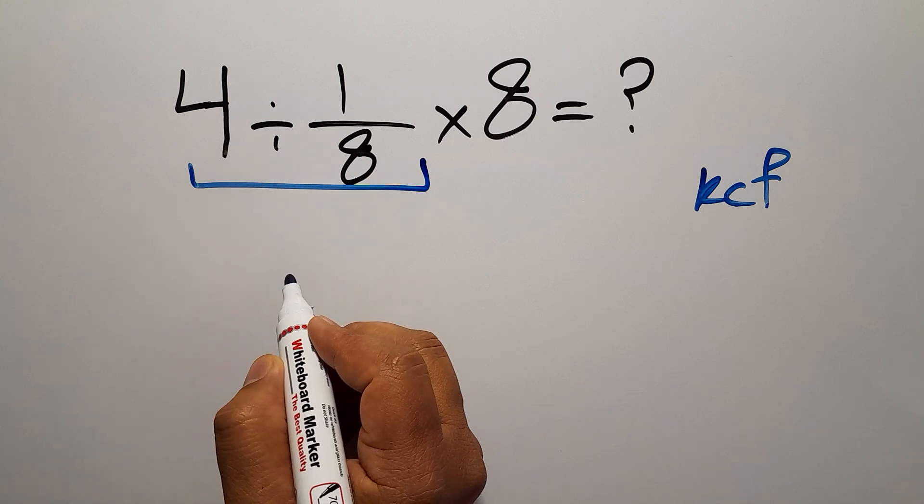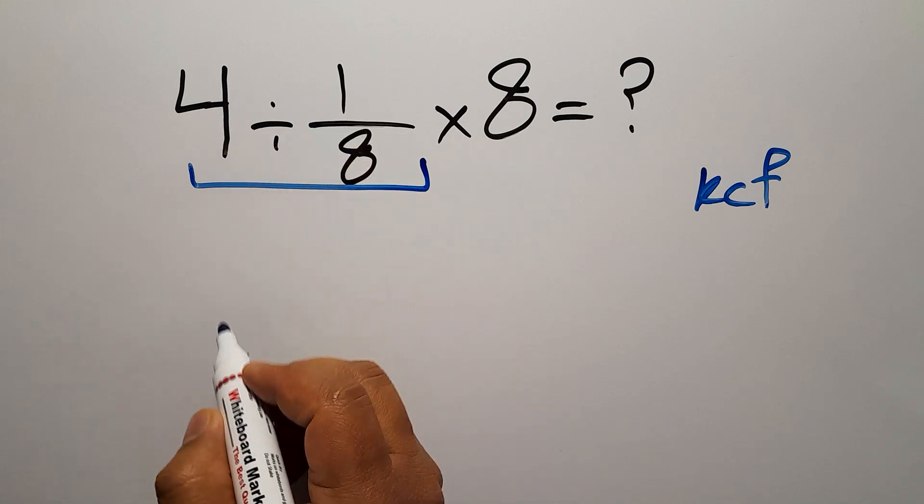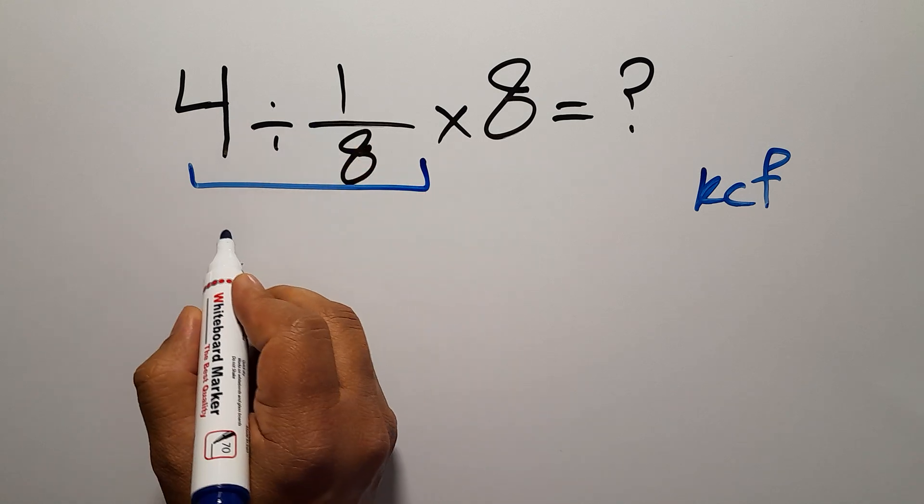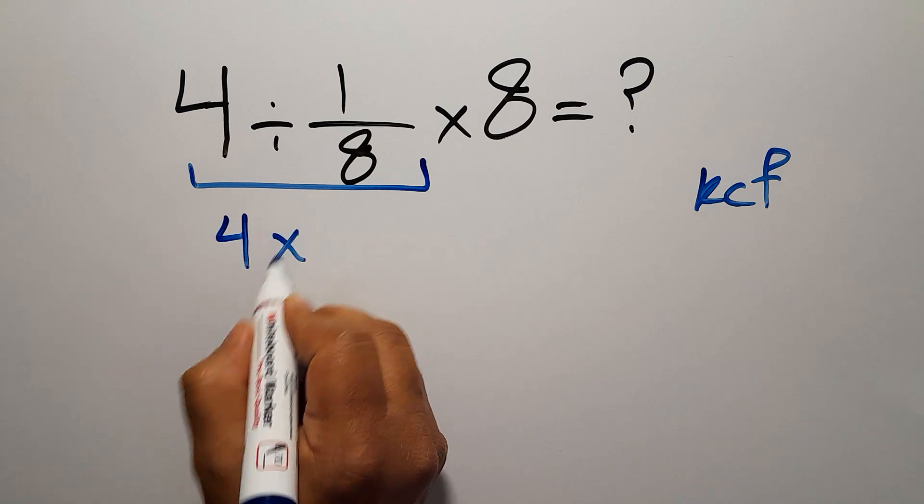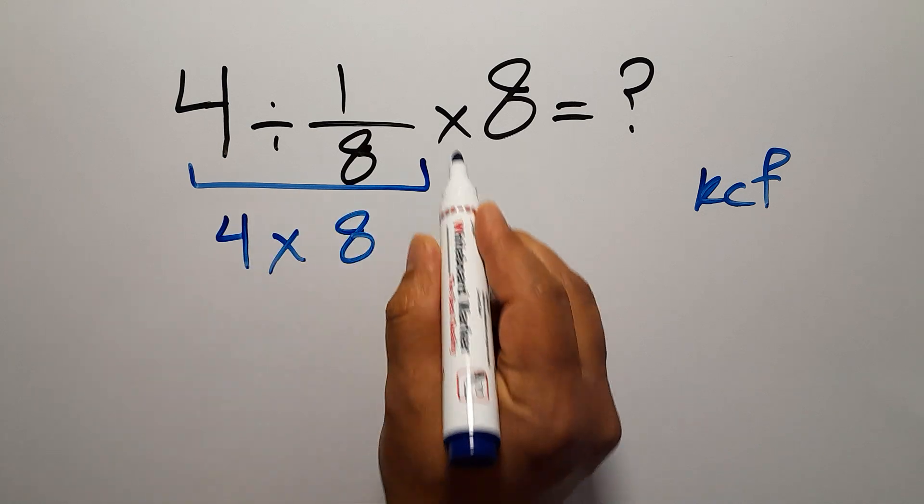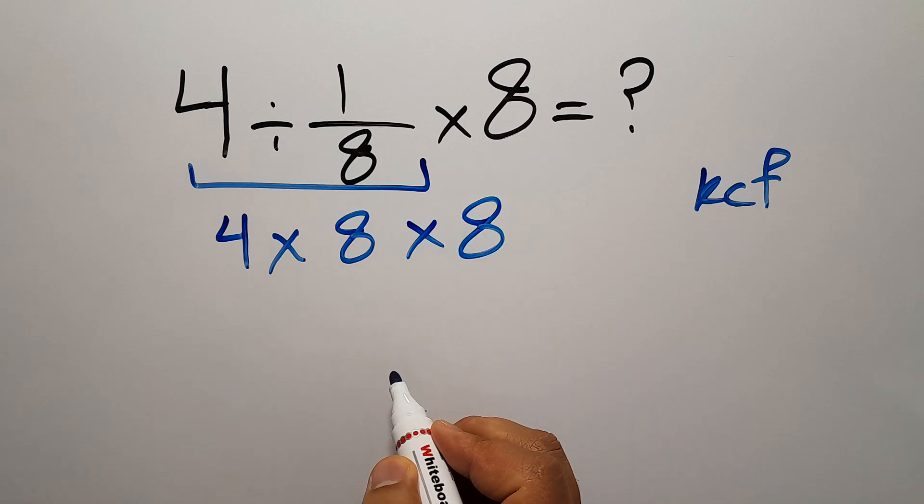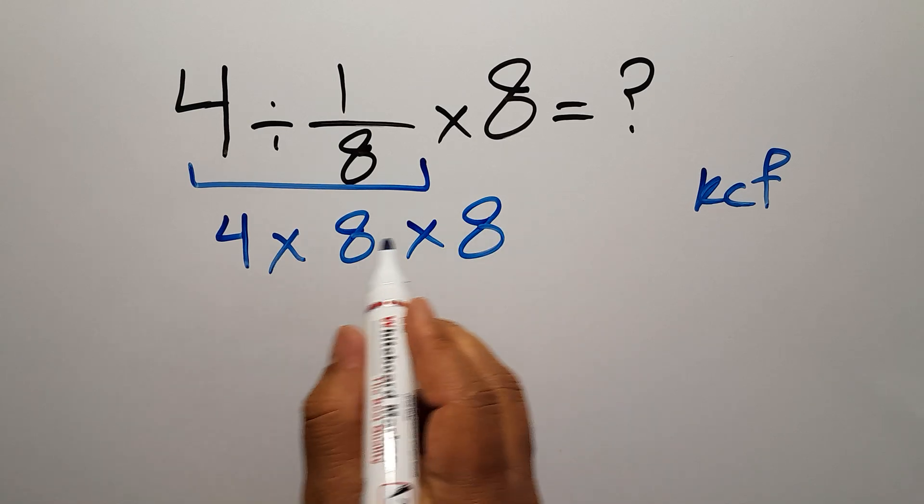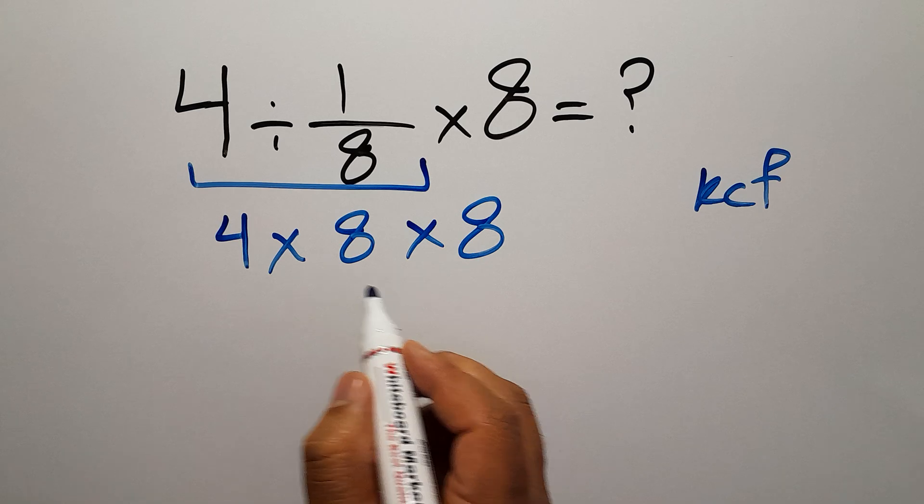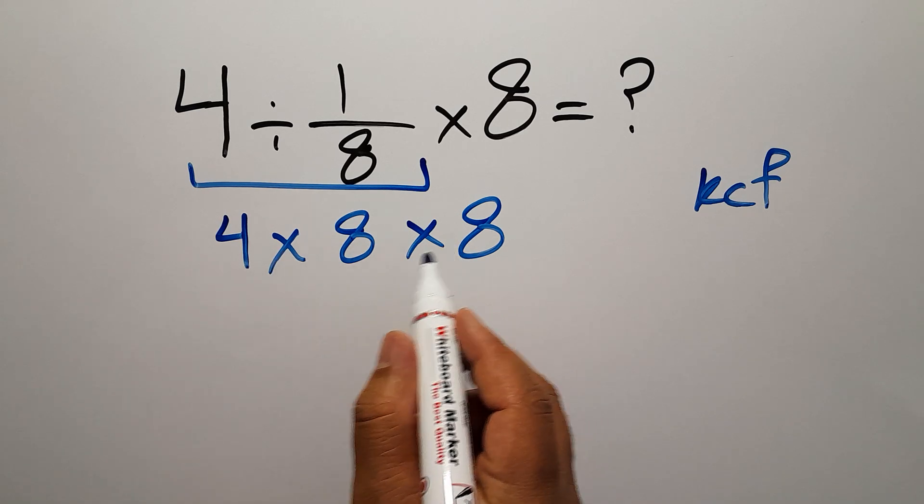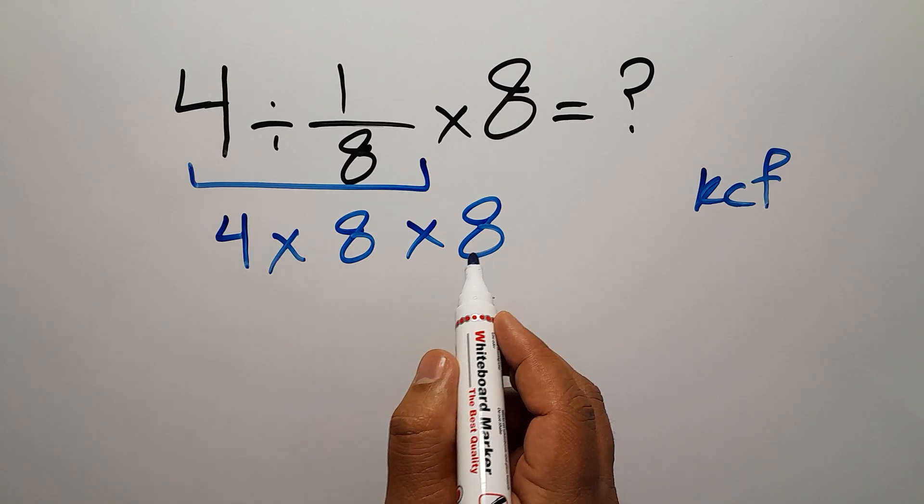Change division to multiplication and flip the second fraction. We can write 4 times 8, and again here we have times 8. Now we have two multiplications, and when we have more than one multiplication in an expression we have to work from left to right.